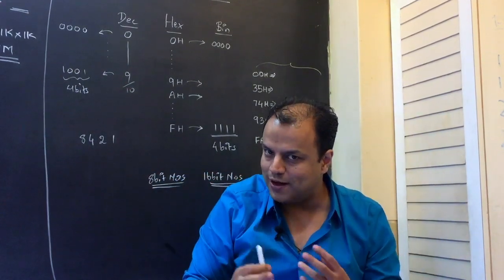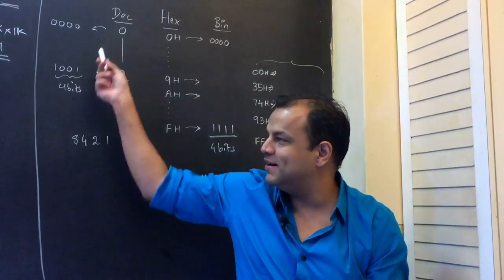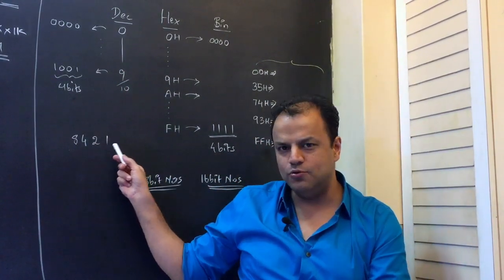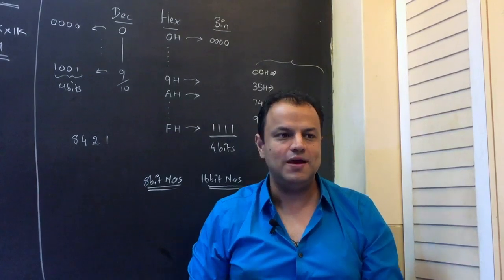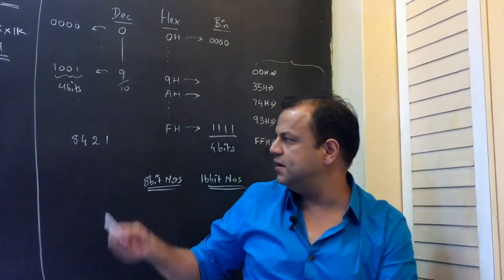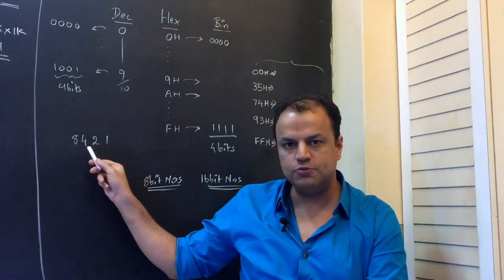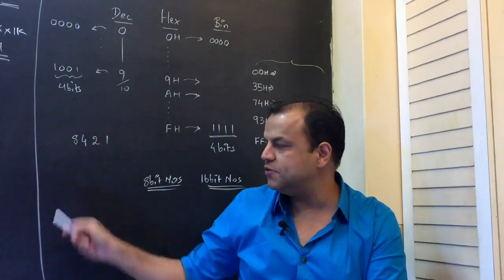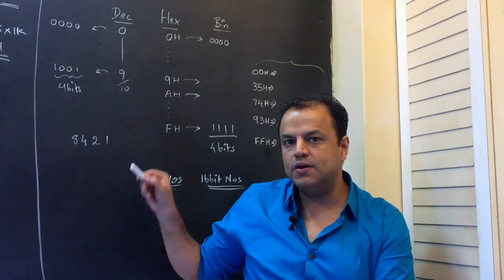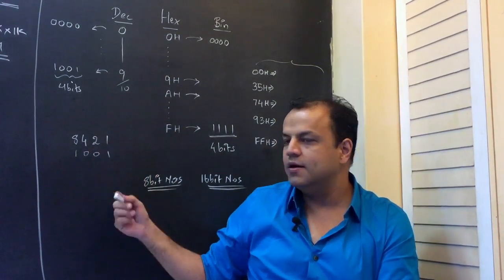I'm sure everybody knows how to do this. There is a trick: 8, 4, 2, 1. Just like in decimal we have units, tens, hundreds, thousands — similarly in binary they are all powers of 2: 2^0, 2^1, 2^2, 2^3. So if I want 9, that means I want an 8 and a 1. 8 plus 1 is 9, so that is 1001.